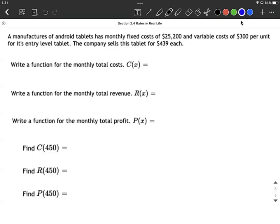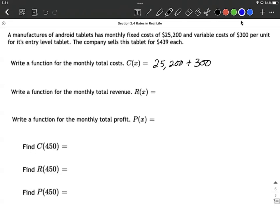Jumping right in here, our cost function is going to have two components. We have both fixed costs, $25,200, plus our variable costs. Now it's going to be $300, but that needs to be multiplied by however many units we're creating or selling. So $300 multiplied by X because X is our variable in this situation.